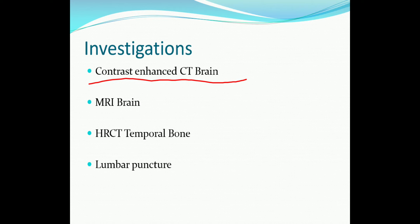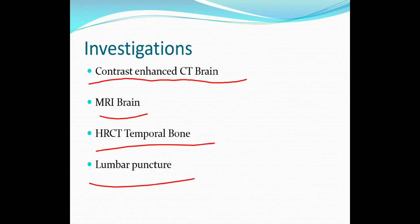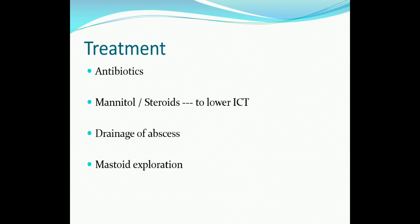CT scan and MRI are complementary: CT scan gives good information about bony details while MRI gives better information about soft tissue details. A high-resolution CT scan may also be taken to know the status of the middle ear and the mastoid air cells. Lumbar puncture may be needed for CSF study. Treatment includes starting with IV antibiotics, followed by mannitol or steroids to lower intracranial tension, then draining the abscess, and finally mastoidectomy to address the ear pathology.